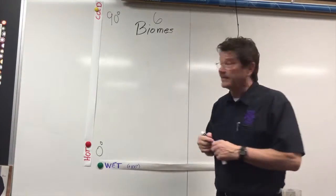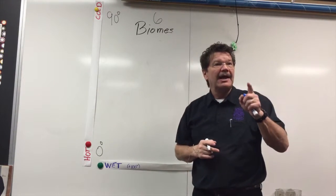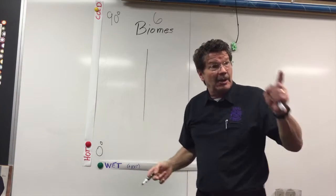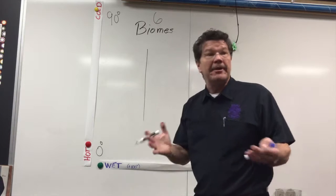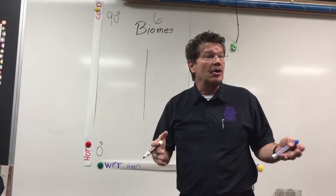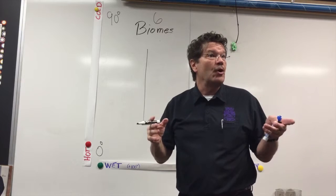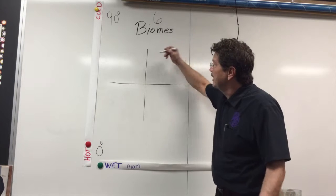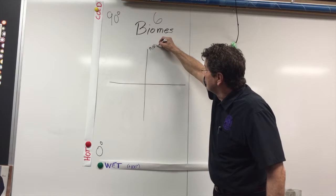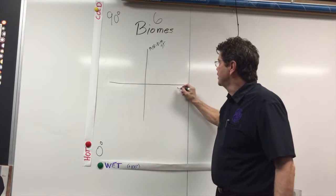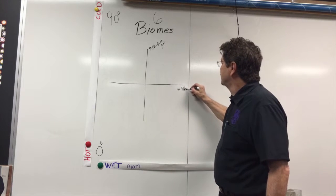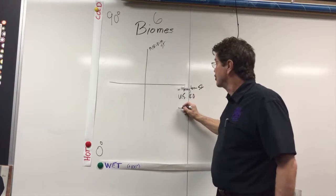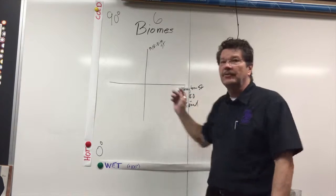Let me show you something interesting about the city we live in. The city we live in has a Meridian — in fact, the street that goes down the middle is called Meridian Street. We don't have an equator, but the very first road made in America is called the National Road. We know it as U.S. 40, or Washington Street. Washington Street goes like this through the city.